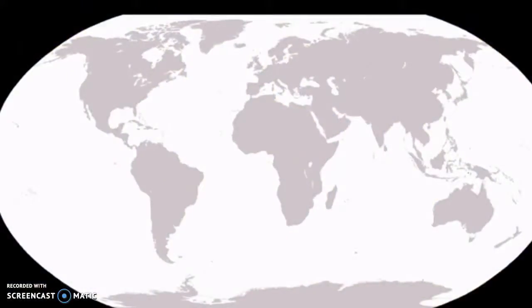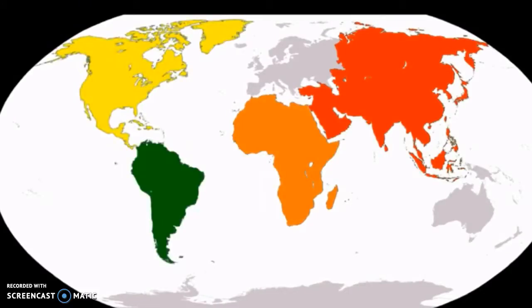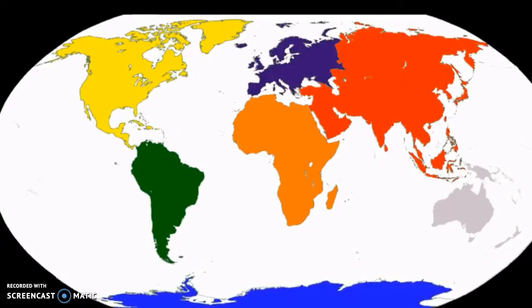From largest to smallest, the seven continents are Asia, Africa, North America, South America, Antarctica, Europe and Australia.